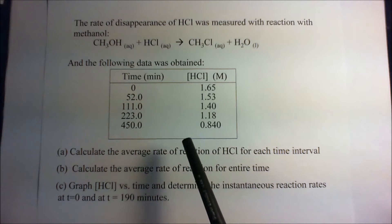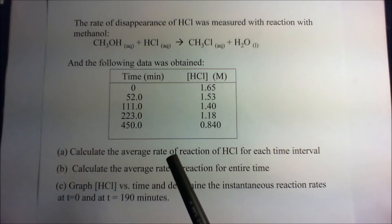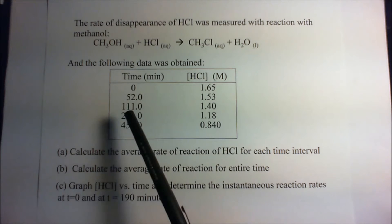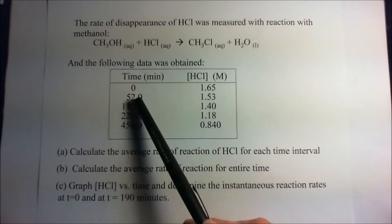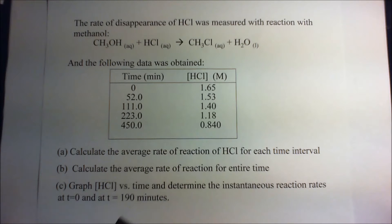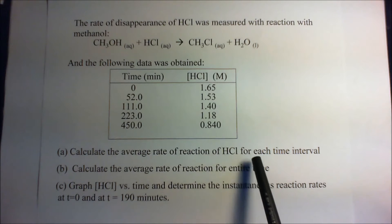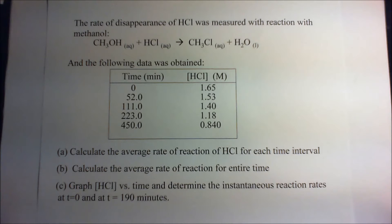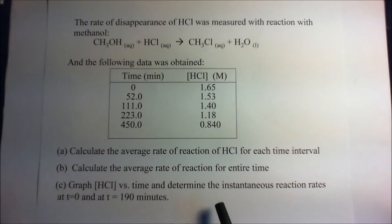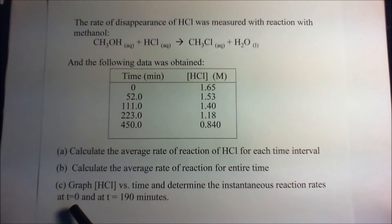This is the concentration of hydrochloric acid in moles per liter of solution. Here's the time, and this is in minutes. At zero, we had 1.65 molarity, and at 52 minutes we had 1.53 molarity, and so forth. We want to calculate the average rate of reaction for each time interval first, then the average rate for the entire interval from zero to 450 minutes, and then graph the concentration of HCl versus time to determine instantaneous reaction rates at time zero and at 190 minutes.